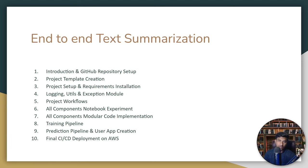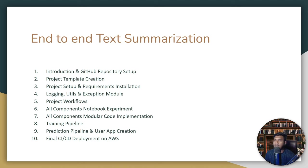We'll be doing everything on our local machine, though you can also perform this in Google Colab. We'll also be discussing the logging module, utils module, and exception module — these are modules very much needed whenever you're trying to implement any end-to-end project. Then we'll be discussing the project workflow: where to start and how to start, which components you need to write first.